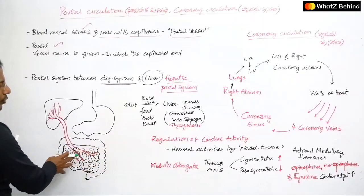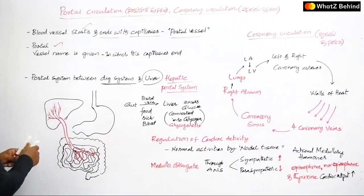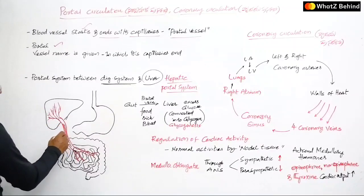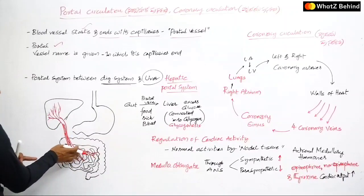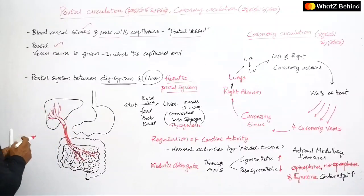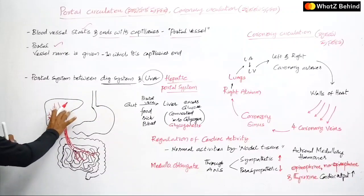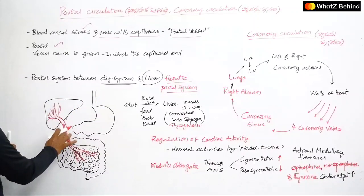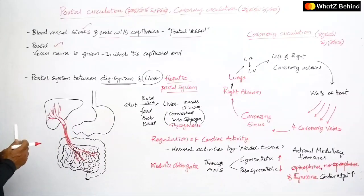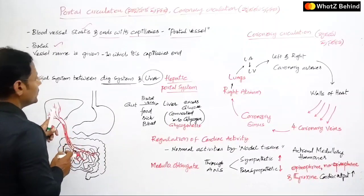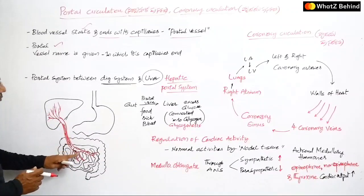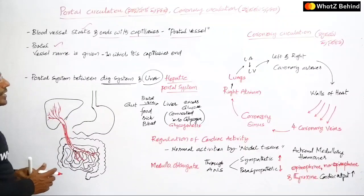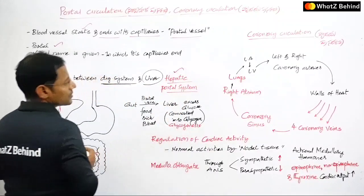The portal vein starts with capillaries in the digestive system — particularly the small intestine — and ends in the liver. Because it ends in the liver, it is called the hepatic portal vein. This is the blood vessel present between the digestive system (jirna shaamu) and the liver. That is why it is called the hepatic portal system.